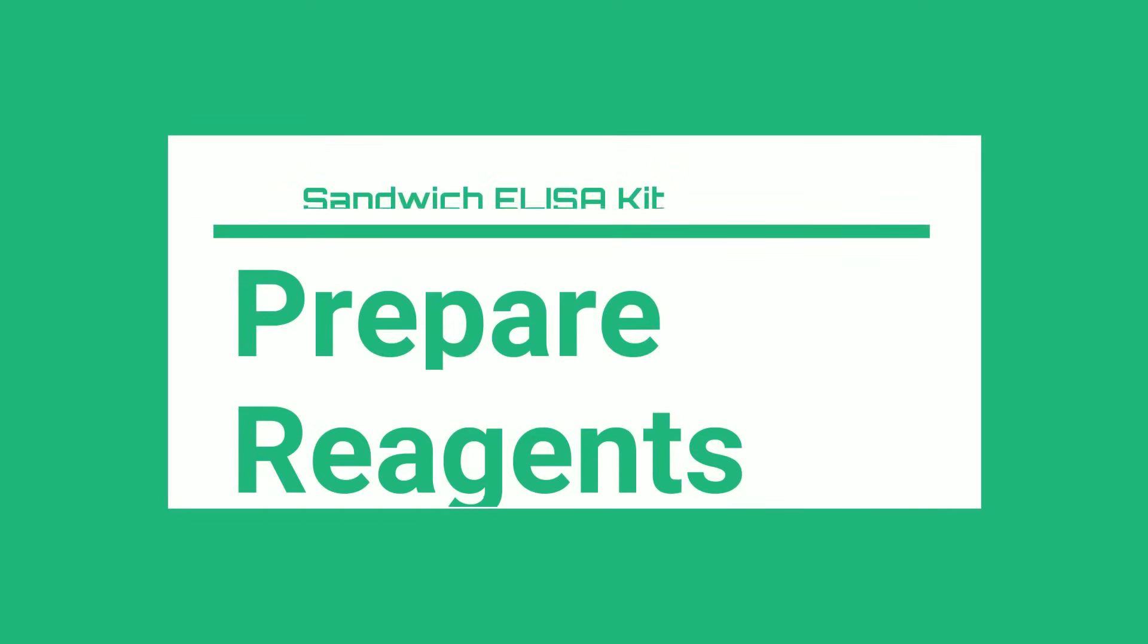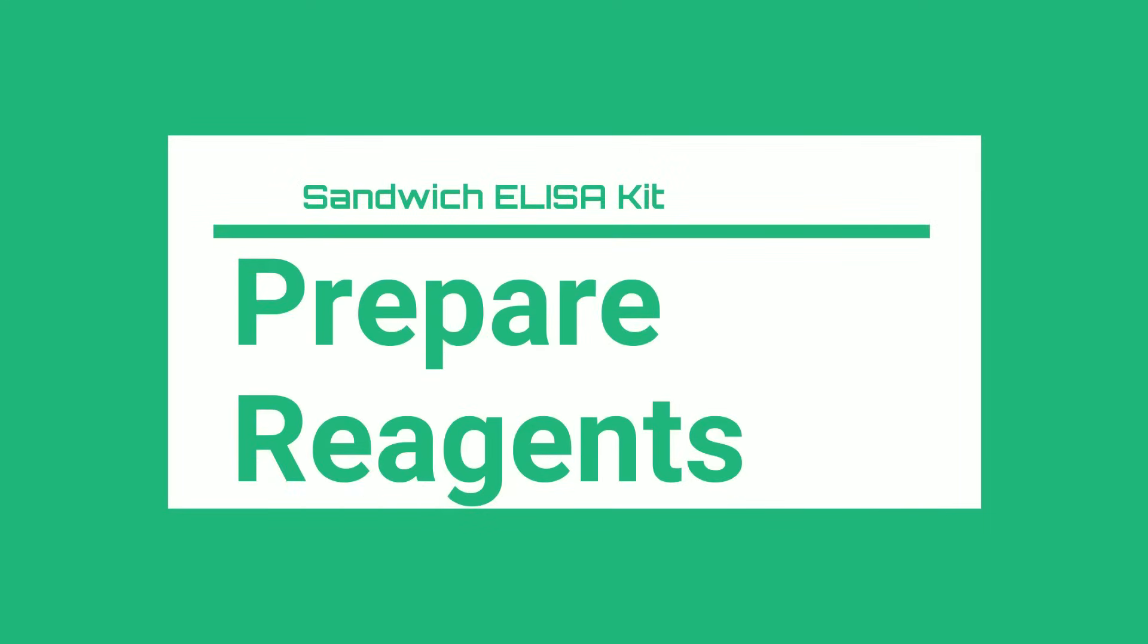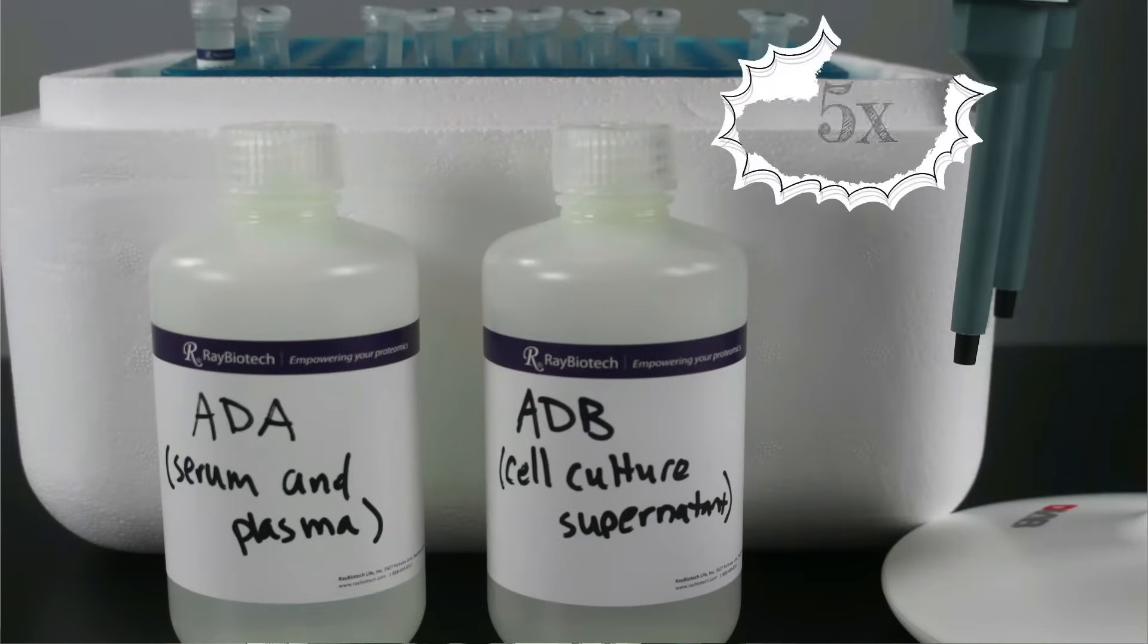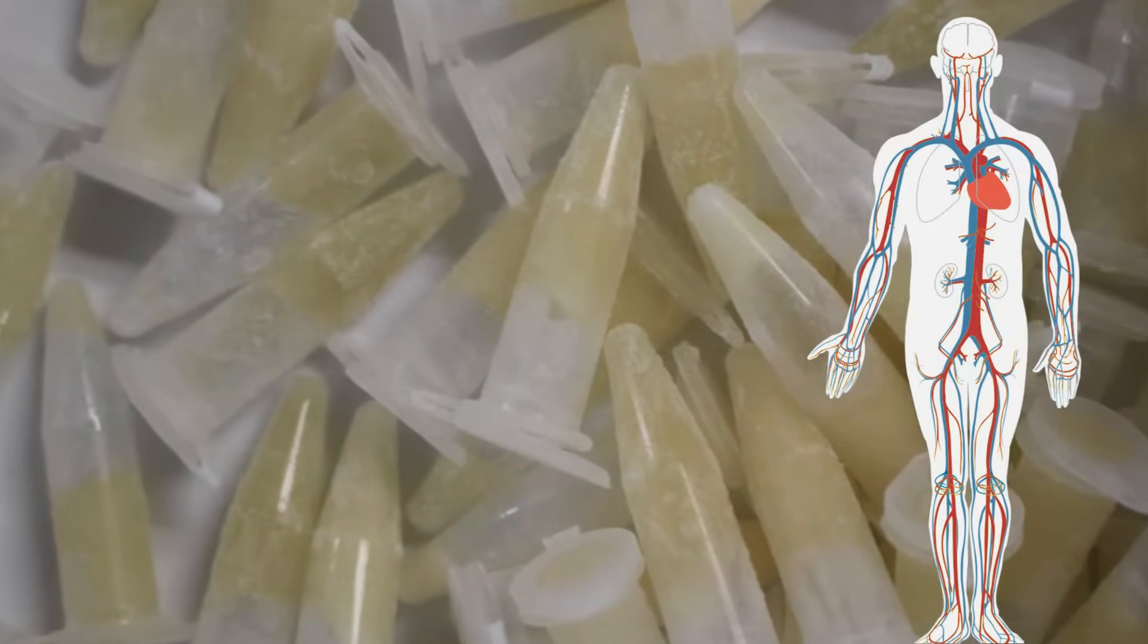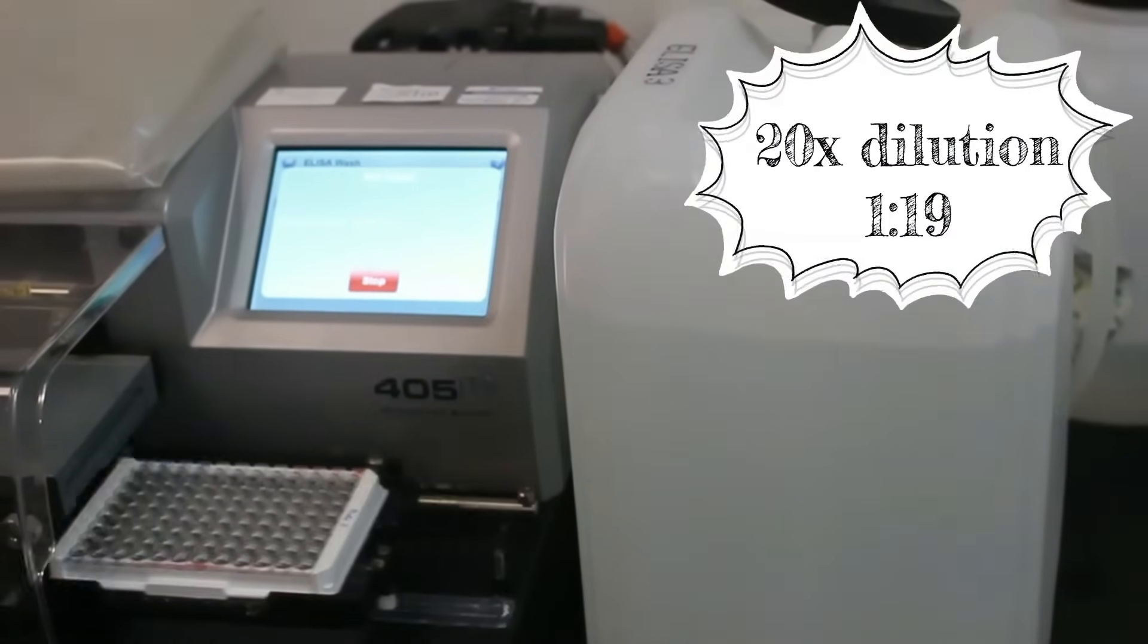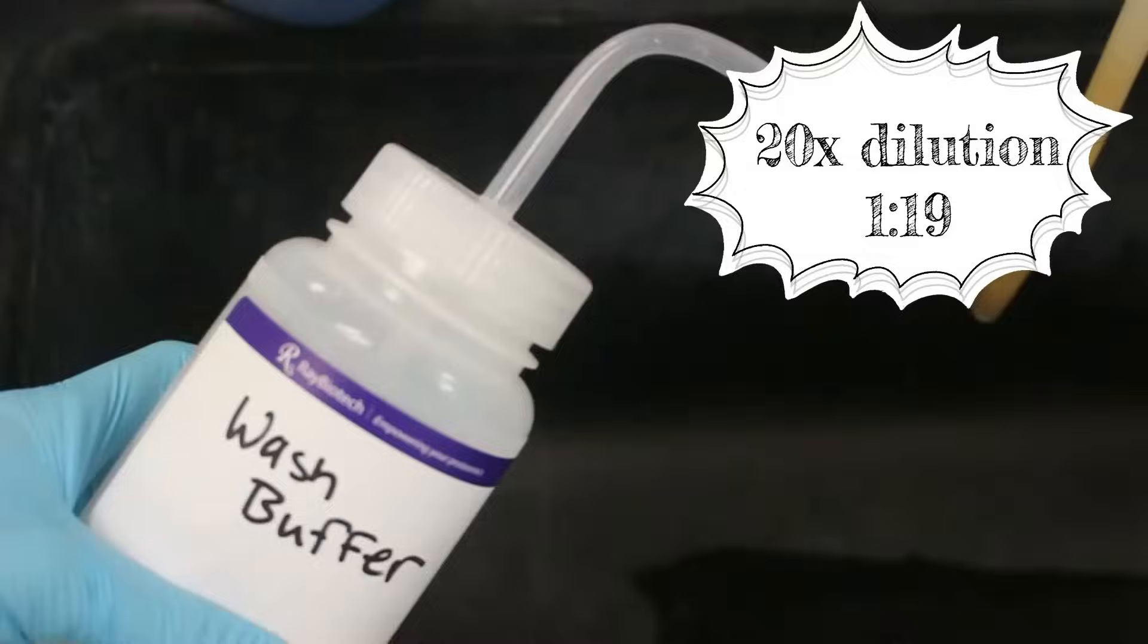Before we start, we are going to prepare our reagents. Concentrated buffers are diluted with deionized water. If using cell culture samples, you only need to dilute ADB. If using serum and plasma samples, dilute both ADA and ADB. Dilute wash buffer. Even if you already use your own, we recommend using ours.